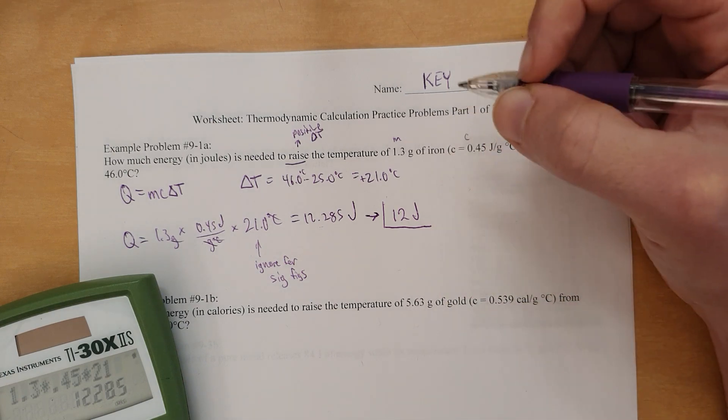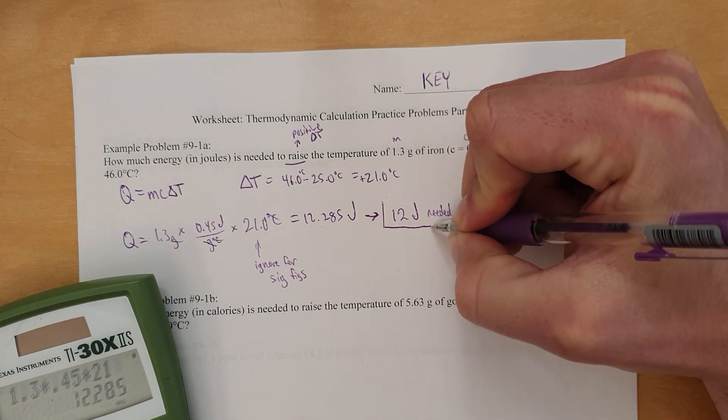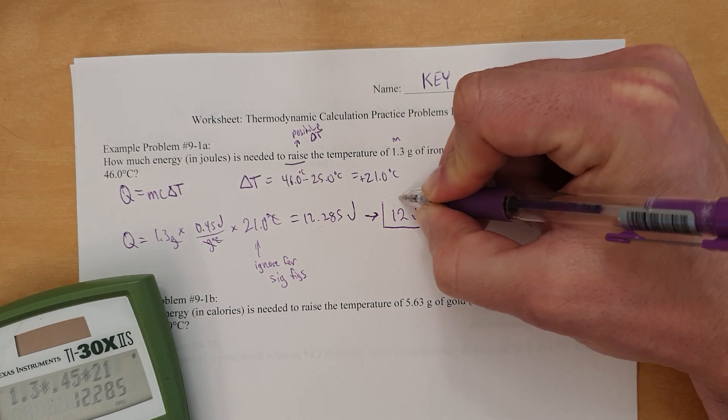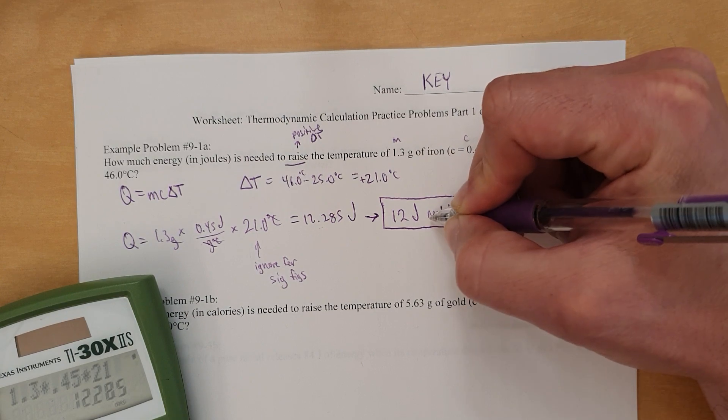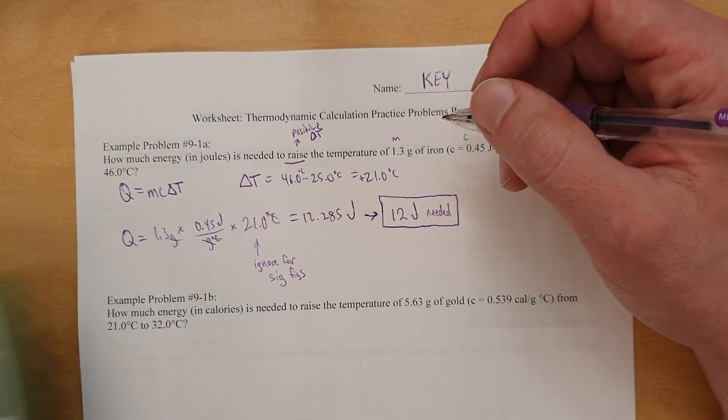So we're going to call the final answer 12 joules. And more specifically, we're going to say 12 joules needed, or Q equals 12 joules, or Q equals plus 12, or something like that. Just to make it obvious that we understand that the energy is being absorbed, and Q is a positive number.